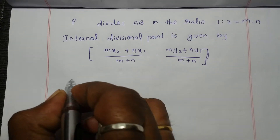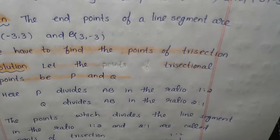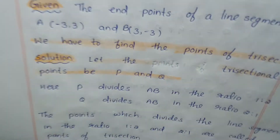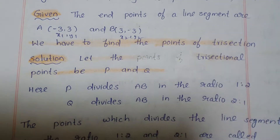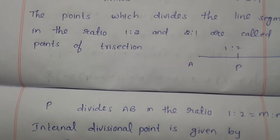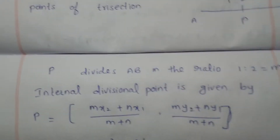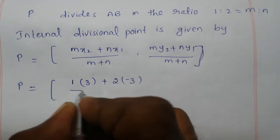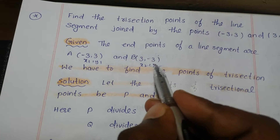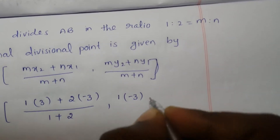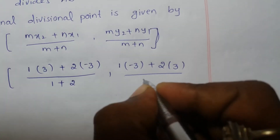Substituting all the values: m is 1, x2 is 3, n is 2, x1 is -3, and m + n is 1 + 2 = 3. For the y-coordinate: m·y2, where y2 is -3, plus n·y1, where y1 is 3, divided by m + n which is 1 + 2 = 3.